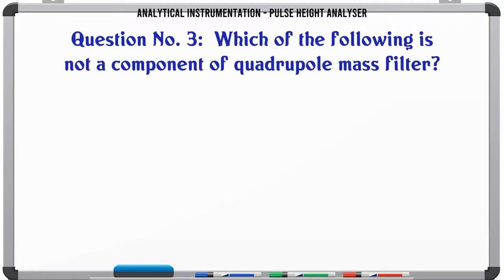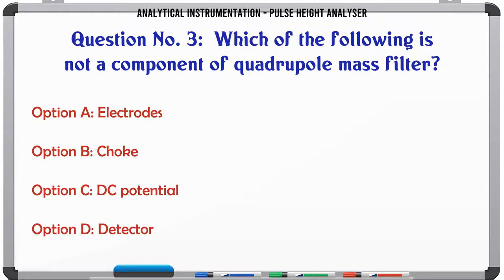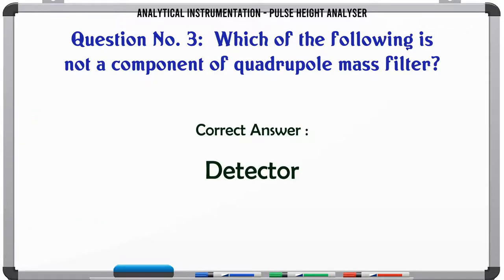Which of the following is not a component of quadrupole mass filter? A. Electrodes. B. Choke. C. DC potential. D. Detector. The correct answer is: